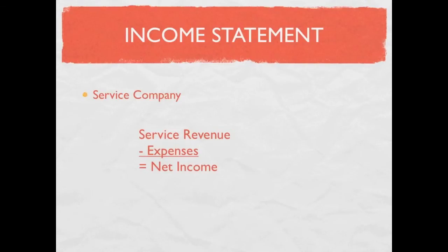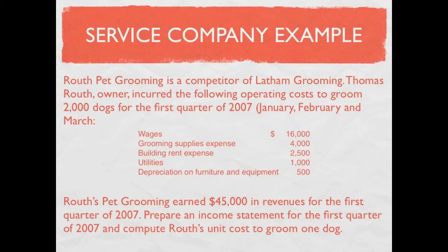Let's look at an example of a service company income statement. Here we have Ruth Pet Grooming, who is a competitor of Latham Grooming. Thomas Ruth, owner, incurred the following operating costs to groom 2,000 dogs for the first quarter of 2007 — January, February, and March. We're given expenses: wages, grooming supplies, building rent, utilities, and depreciation on furniture and equipment. Ruth's Pet Grooming earned $45,000 in revenues for the first quarter of 2007. We need to prepare an income statement for the first quarter of 2007 and compute Ruth's unit cost to groom one dog.